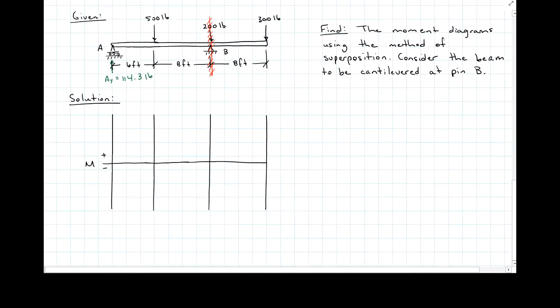AY is a point load, so it's going to be a straight line all the way up to B. And its magnitude is 114.3 times 14, so that makes it 1600.